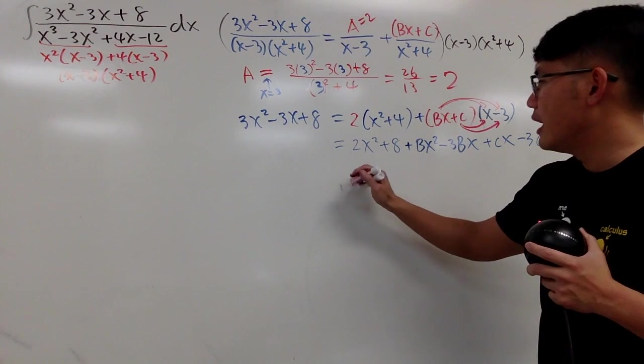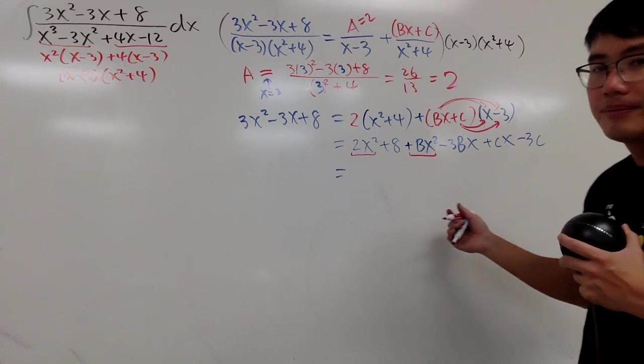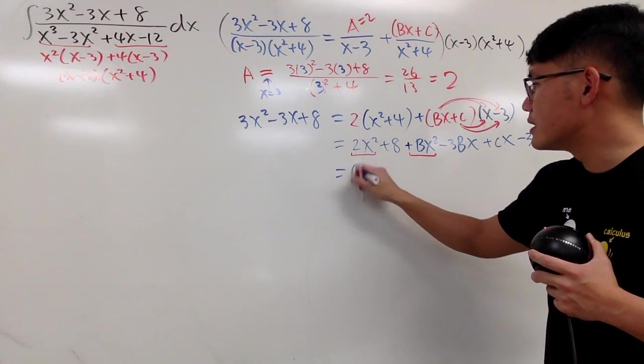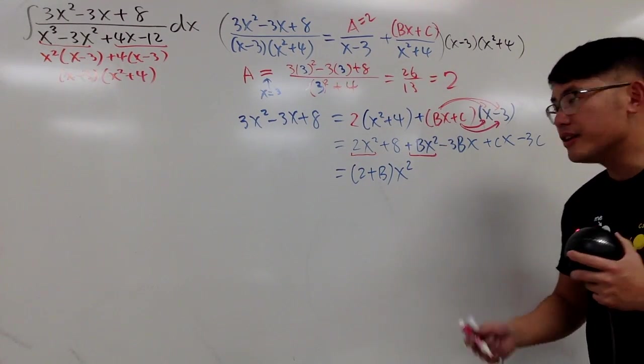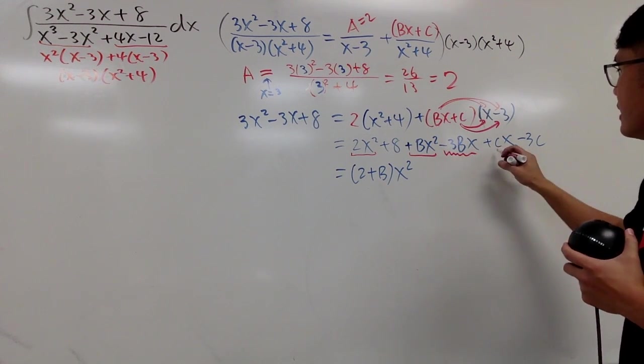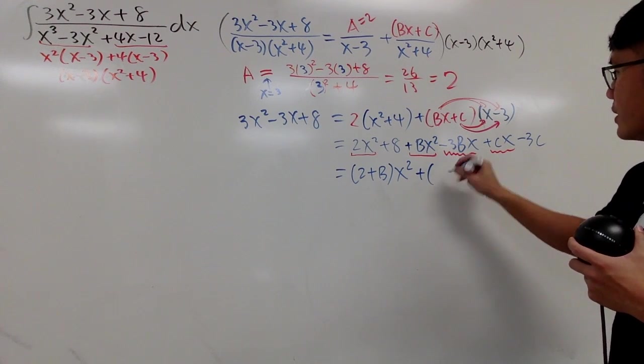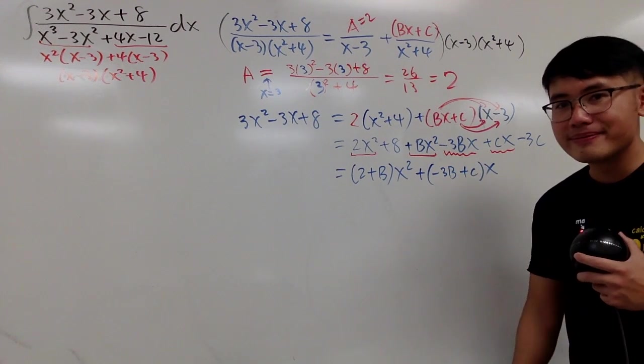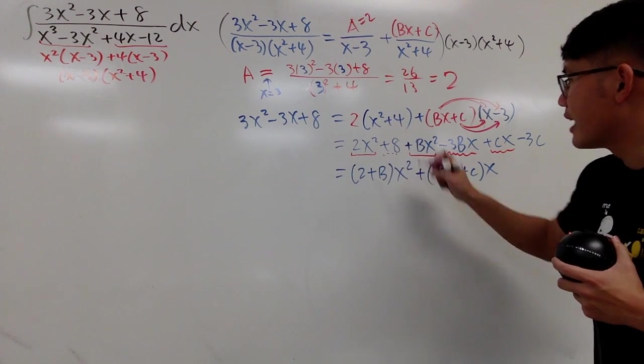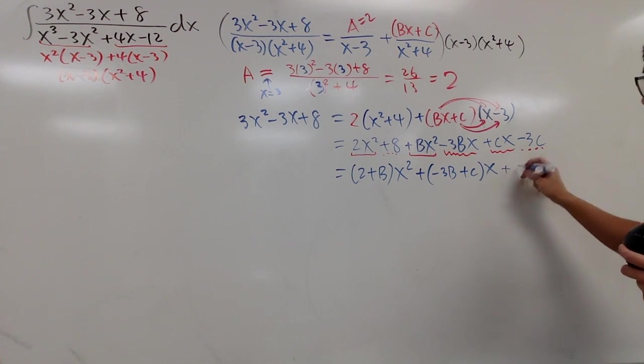Here is the deal. You are going to collect like terms. As you can see, you have 2x squared plus bx squared. You can factor out the x squared, and you end up with 2 plus b, and put the x squared here. Next, collect the linear term, namely the negative 3bx plus cx. And I will just put it as plus parentheses, with negative 3b inside, and then plus c, and then multiply by x on the outside. Lastly, this is the term that has no x, like what is this? So this is the constant terms. Together, you just say you can add 8 minus 3c, like that.